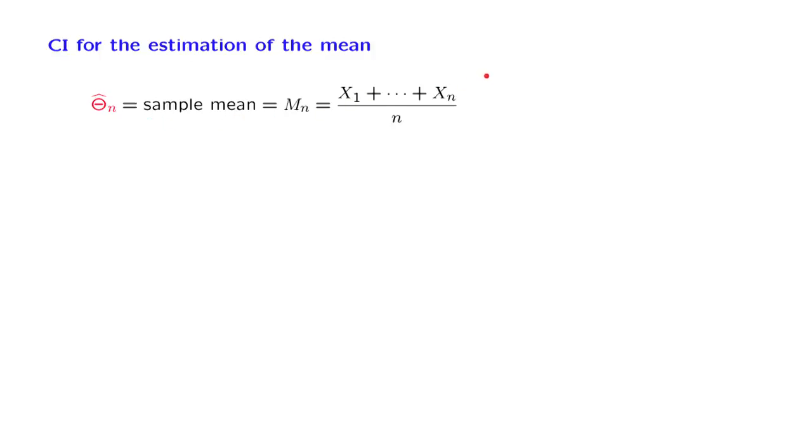Here, X1 up to Xn are independent, identically distributed random variables that are drawn from a distribution that has a certain mean theta, the quantity that we want to estimate, and some variance sigma squared. Let us say that we want to construct a 95% confidence interval.